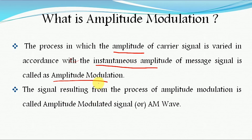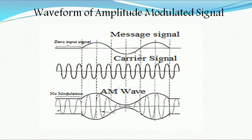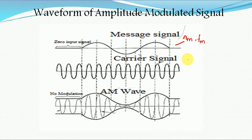The signal resulting from the process of amplitude modulation is called an amplitude modulated signal or an AM wave. In amplitude modulation, the information signal is transmitted in the form of amplitude variations of a carrier signal. Now let us see how the waveforms of the amplitude modulated signal look. The message signal has an amplitude Am and a frequency Fm. At a certain point there is no message signal, then the message signal is applied to the modulation circuit, and simultaneously the carrier signal is also applied, with amplitude Ac and frequency Fc.